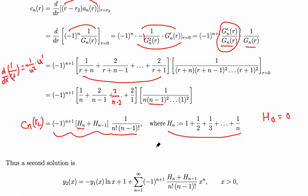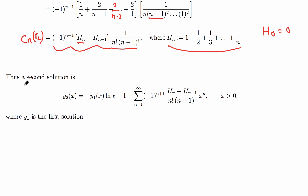Collecting everything, with a = −1 and r₂ = 0, the second solution is y₂ = −y₁·ln(x) + x⁰·Σ cₙ xⁿ = −y₁·ln(x) + Σ cₙ xⁿ. We have now found the closed-form solutions of the differential equation.